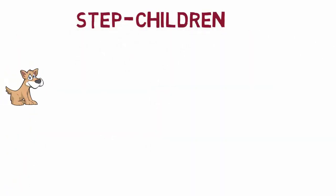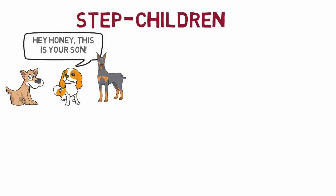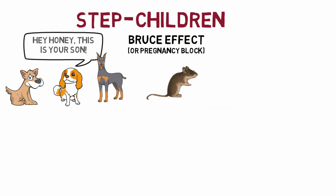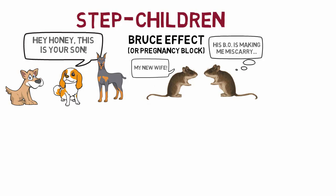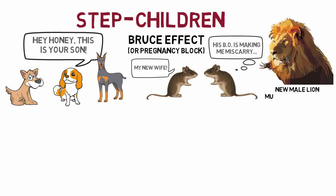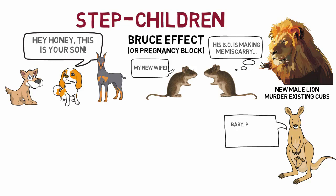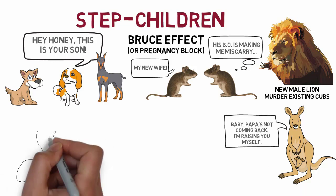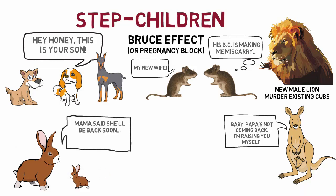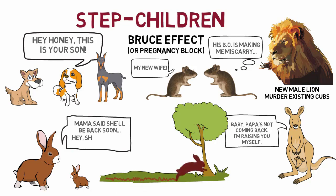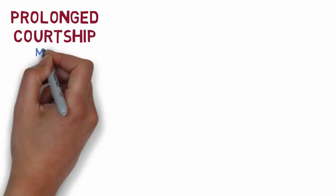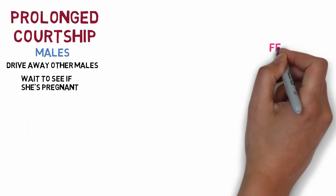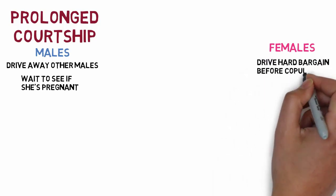Mothers may try to trick other males into rearing children as their own, but natural selection will penalize gullibility in such males. The Bruce effect, discovered by Hilda Bruce, is the tendency of a pregnant female mouse to abort her pregnancy if the smell of another male rodent differs from that of her former mate. Male lions new to a pride sometimes murder existing cubs, presumably because they are not their children. Females that cannot convince a male to adopt her children may decide to rear the child herself, and a female in danger of being deserted might walk out on the male before he walks out on her. Males can also enforce prolonged courtship, drive away other males, and wait to see if she is pregnant with stepchildren.